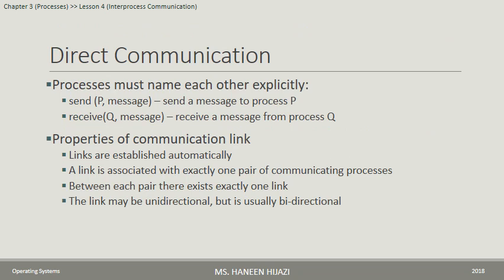Direct Communication: In direct communication, any process that wants to send or receive must name the other process explicitly. For example, when process P wants to send a message to process Q, it must say 'send to Q the message'; when Q wants to receive from P, it must say 'receive from P the message.' A problem with this approach is that if the ID of one process changes, you must find and update all references to that process.